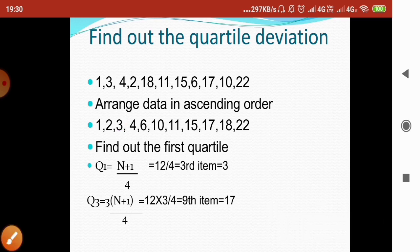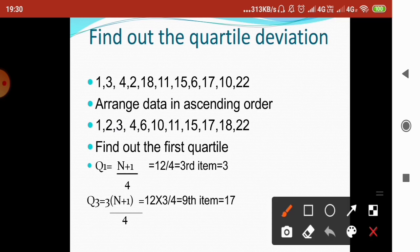Now for Q3, the third quartile is calculated using the formula 3×(n+1) divided by 4. That is 3×12 divided by 4, which equals 36 divided by 4 = 9. So the third quartile is the 9th item. Counting: 1, 2, 3, 4, 5, 6, 7, 8, 9 — the 9th item is 17.